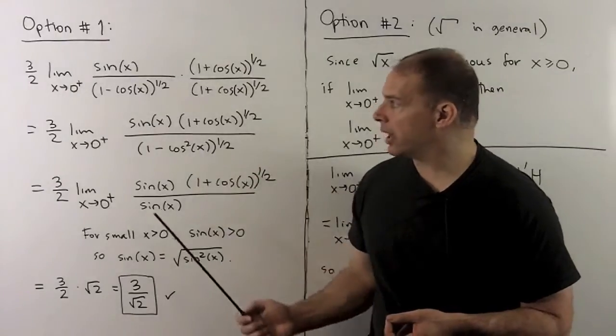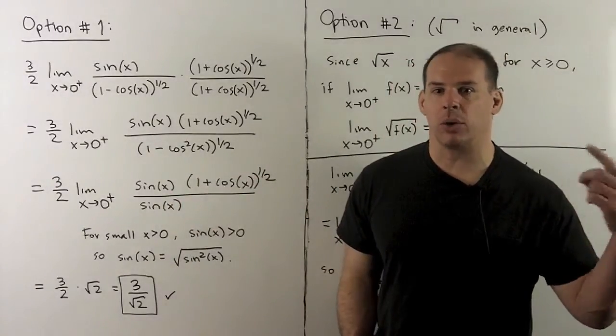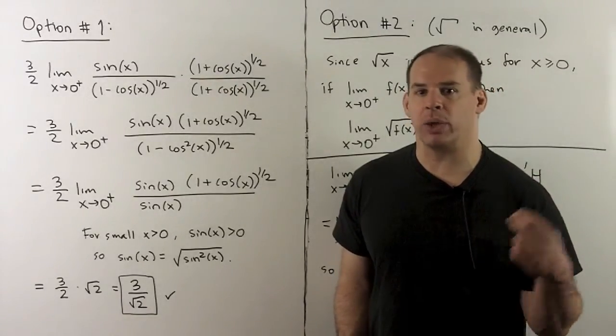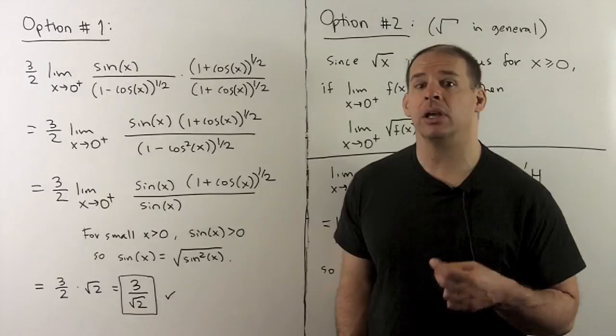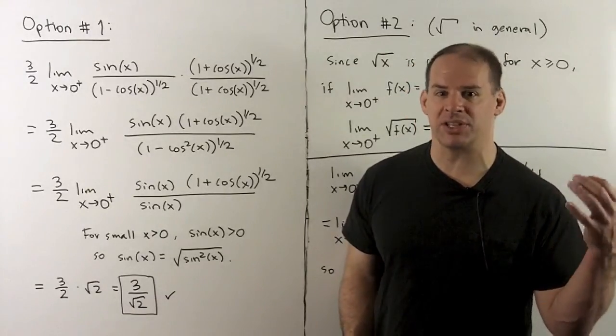With the first option, I note I have a one minus cosine x, that's what's bringing zero into the denominator. If I multiply by one plus cosine x, we get one minus cosine squared x. That becomes sine squared x, and then inside of the square root, it becomes a sine.